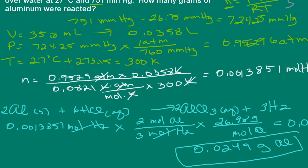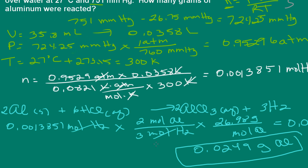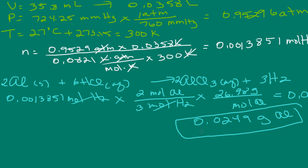In this problem, we had several things going on. First, we identified the reaction and noted that hydrogen gas was collected over water, so we subtracted the partial pressure of the water vapor from the total pressure to find the moles of hydrogen. Once we found the number of moles of hydrogen, we used the balanced chemical equation to relate moles of hydrogen to moles of aluminum reacted, and then converted moles of aluminum to grams of aluminum.